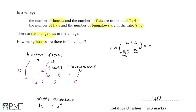We get marks here: firstly for working out the ratio relating houses to bungalows as 14:5, then a second mark for multiplying up by a factor of 10 to find the number of houses when there are 50 bungalows, and the third mark for stating the correct answer of 140 houses.